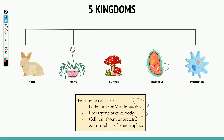When it comes to the five kingdoms, you have the animal kingdom, the plant kingdom, the fungi, the bacteria, and the protoctists. Any given organism that you find can be put under one of these five kingdoms, and each kingdom has various different features.